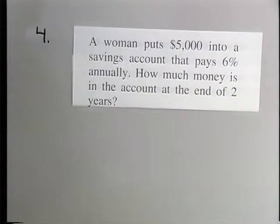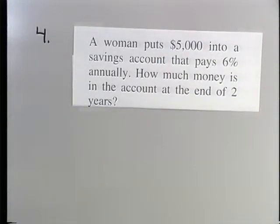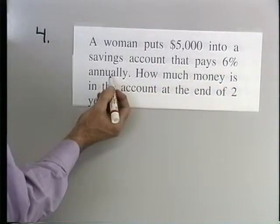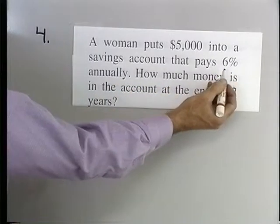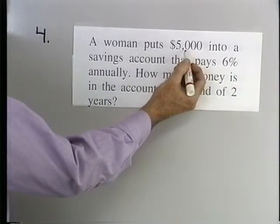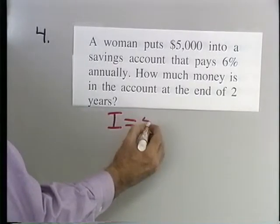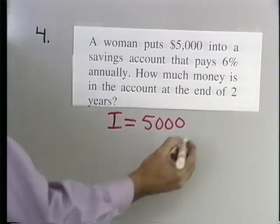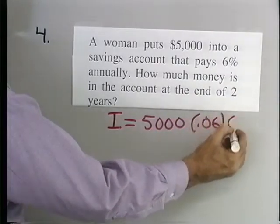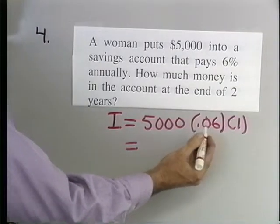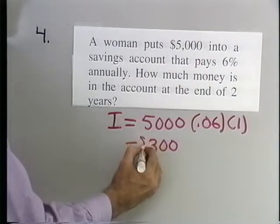Problem 4: A woman puts $5,000 into a savings account that pays 6% annually. How much money is in the account at the end of two years? The account pays 6% simple interest annually. At the end of the first year, the interest is the principal $5,000 times 0.06 times one year, which comes out to $300 in interest.